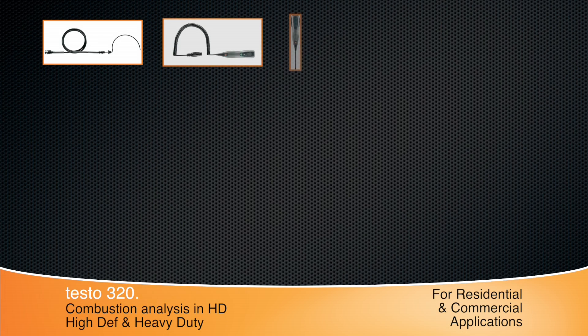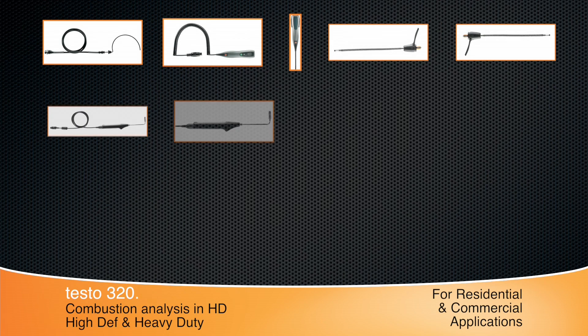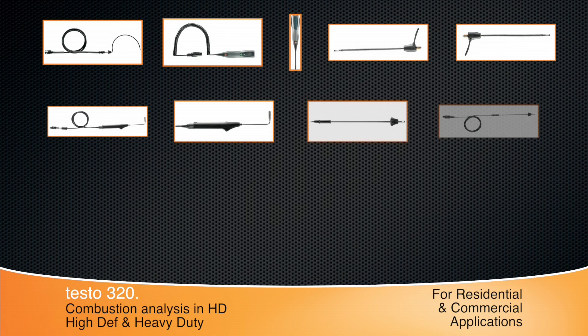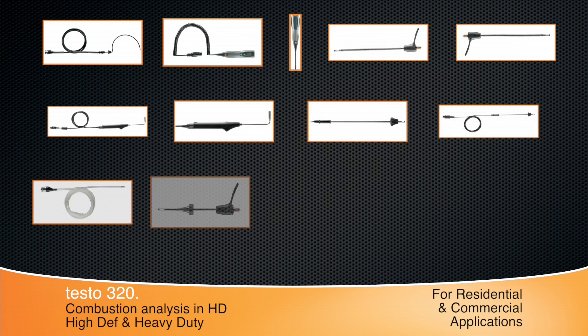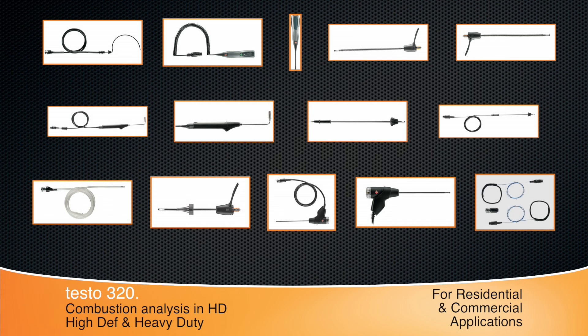The Testo 320 has a probe available for almost any measurement. For more job site testing, longer hose lengths and probes for gas leak, ambient carbon monoxide, and carbon dioxide measurements are available.